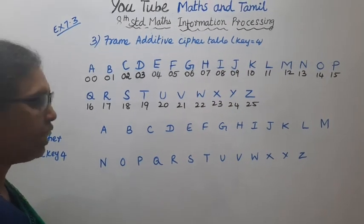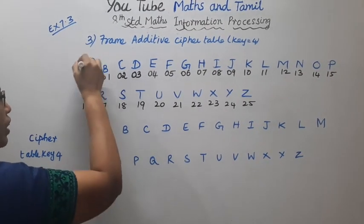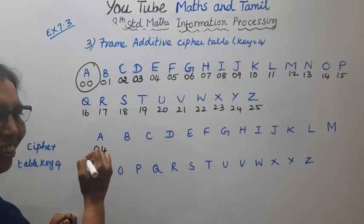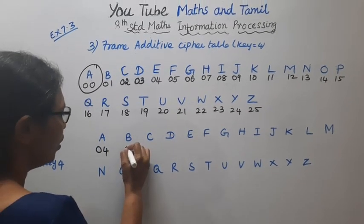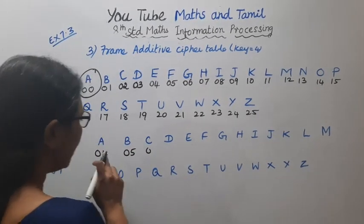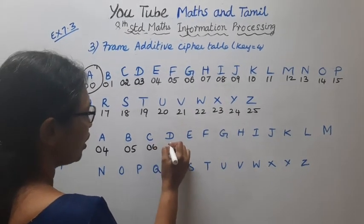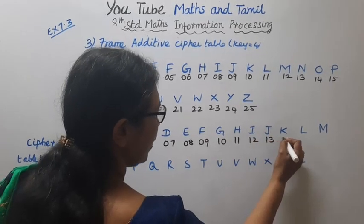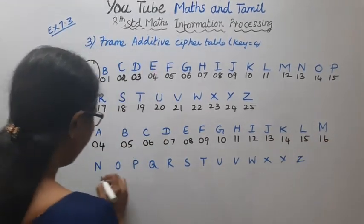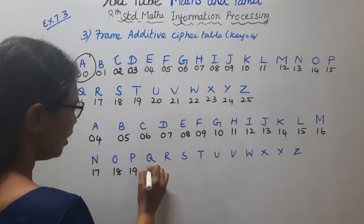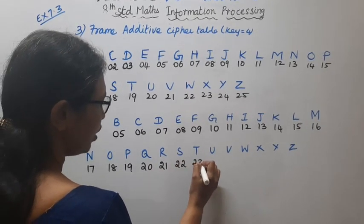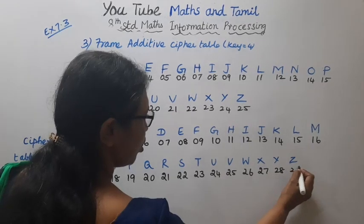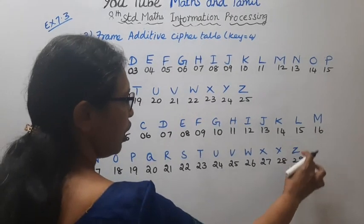Key 4. The cipher table with key 4 maps starting from 04, 05, 06, 07, 08, 09, 10, 11, 12, 13, 14, 15, 16, 17, 18, 19, 20, 21, 22, 23, 24, 25, 26, 27, 28, 29, with values wrapping around — the cipher strategy using key 4 and data range 0 to 29.